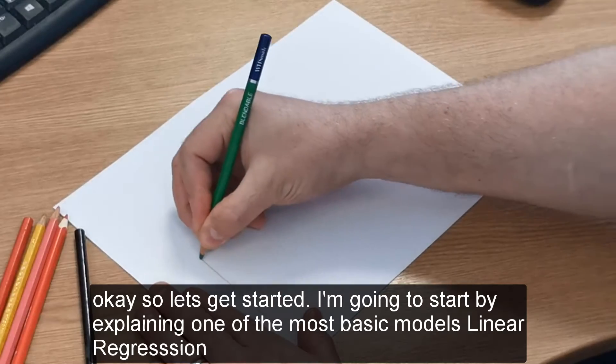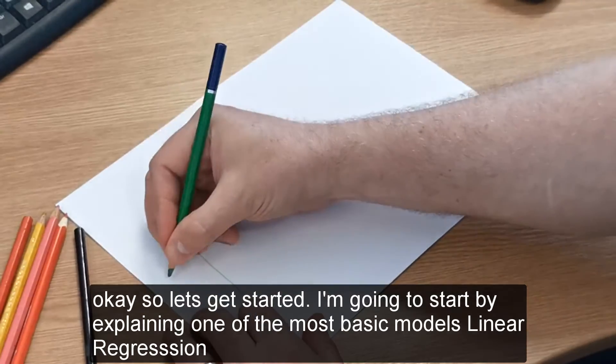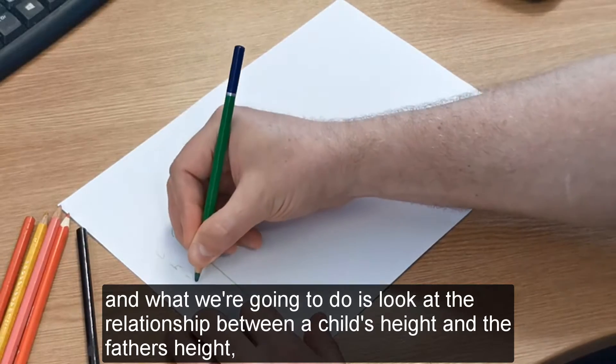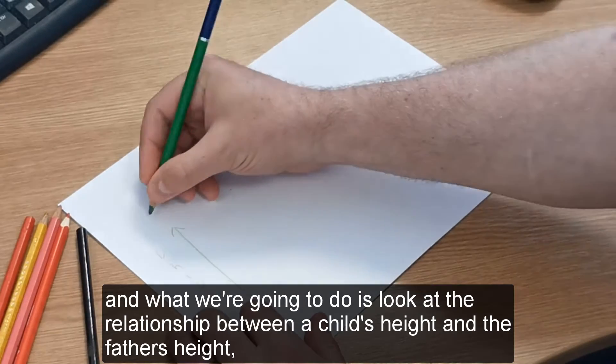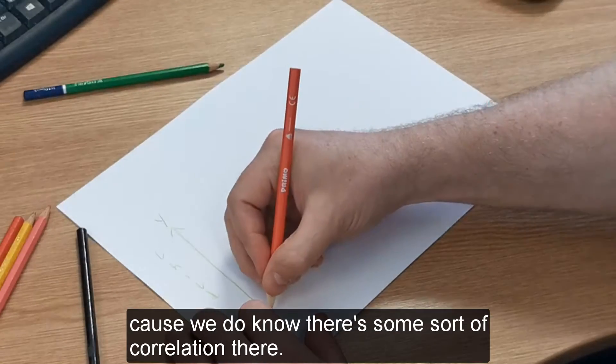I'm going to start by explaining one of the most basic machine learning models: linear regression. We're going to look at the relationship between a child's height and the father's height, because we know there's some correlation there.